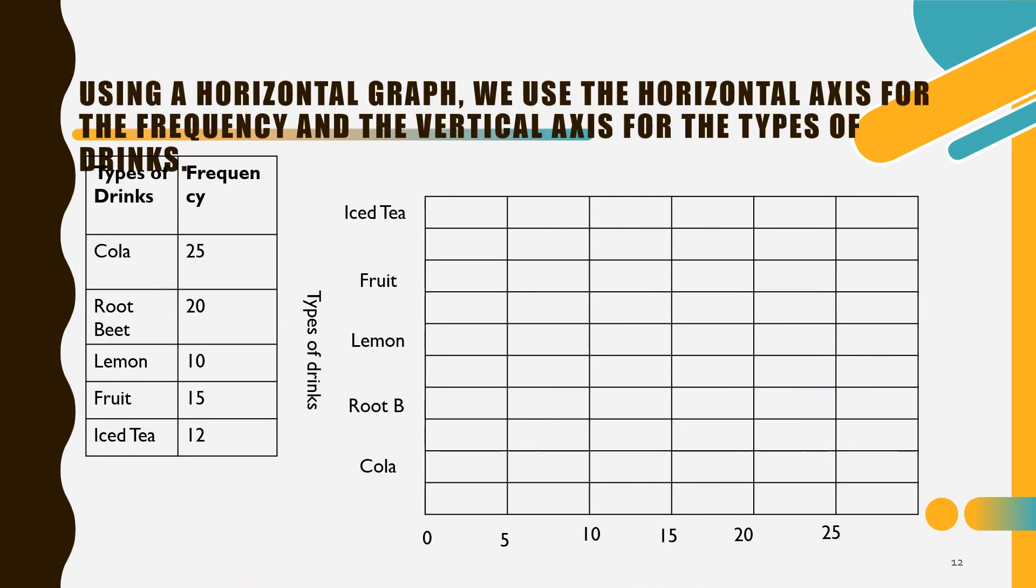Next, let's have now a horizontal bar graph. We're going to use the horizontal. Notice in horizontal, our iced tea now here. The types of drinks is now on the side and the number is at the bottom. That means we're going to construct a horizontal bar graph. For cola, let's start from cola again. We will use this red. Since this is 25, like this. All right. Lovely. And that's it.